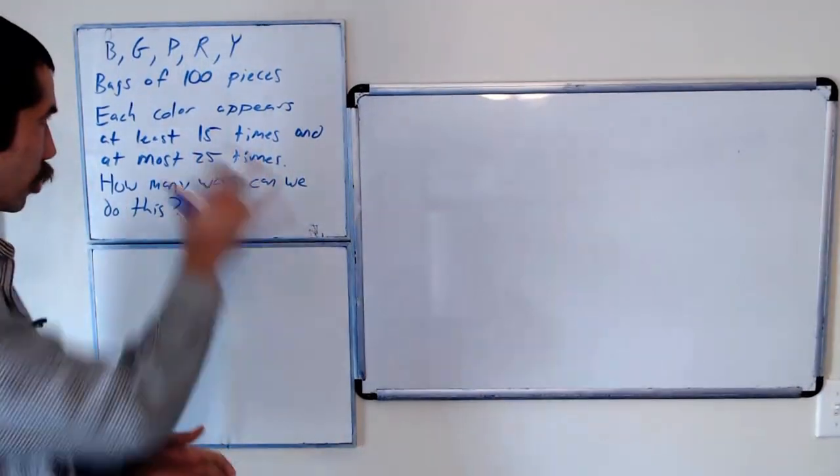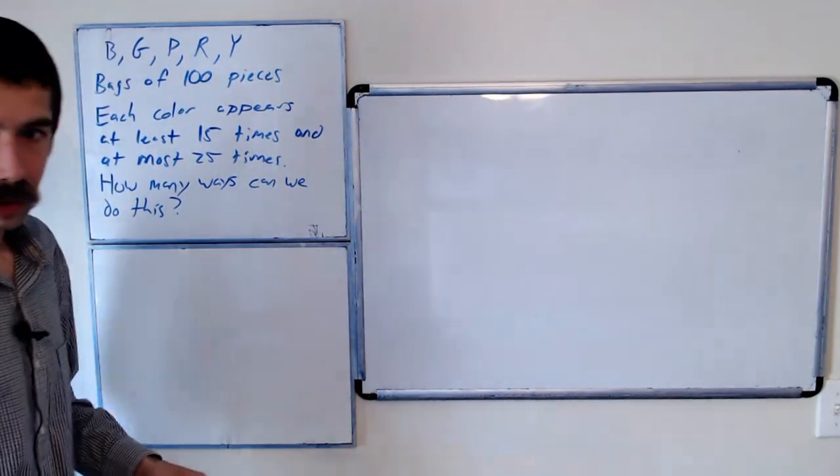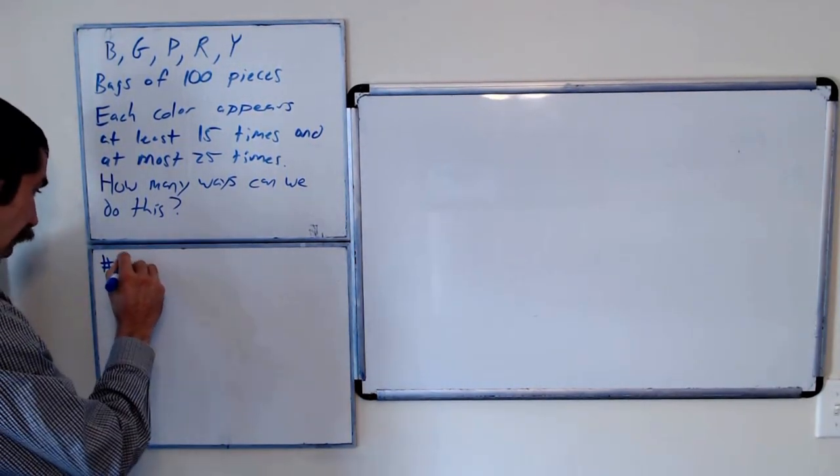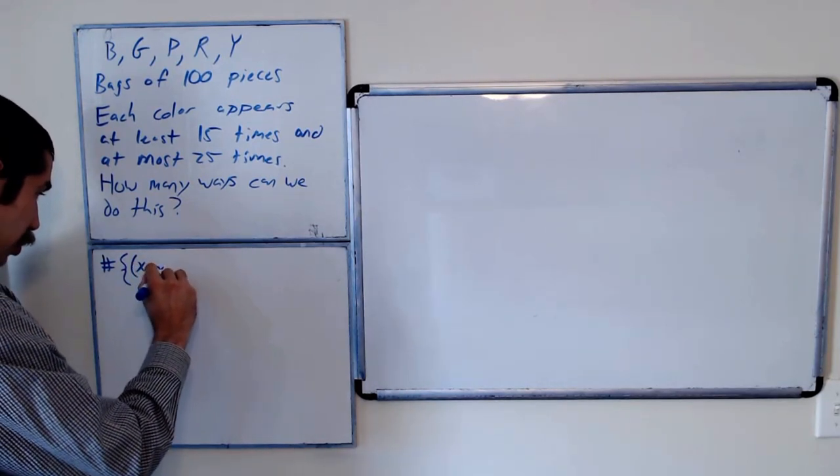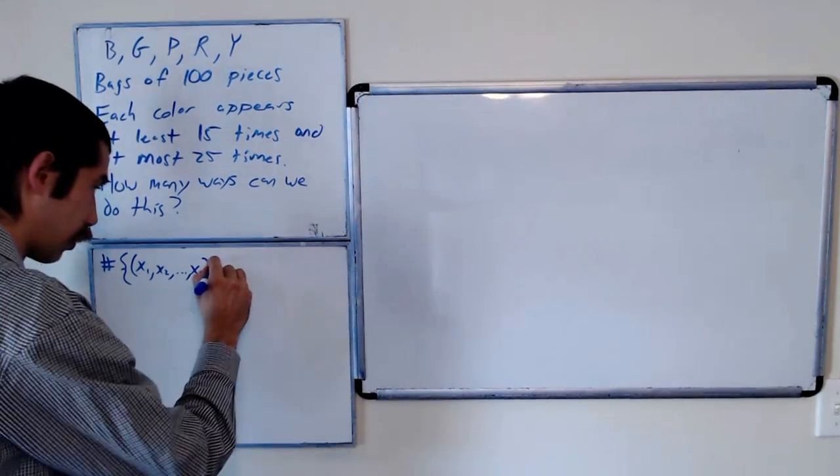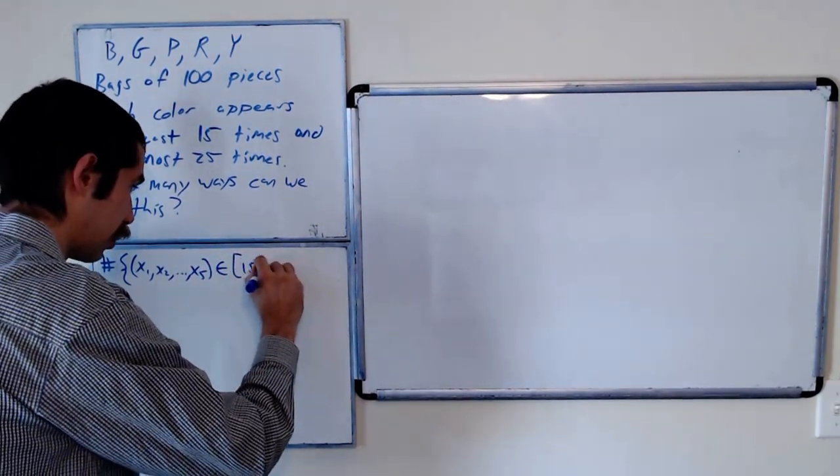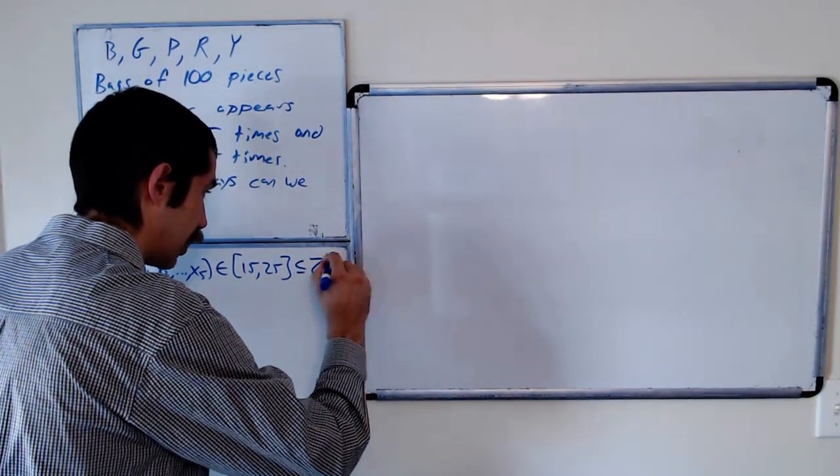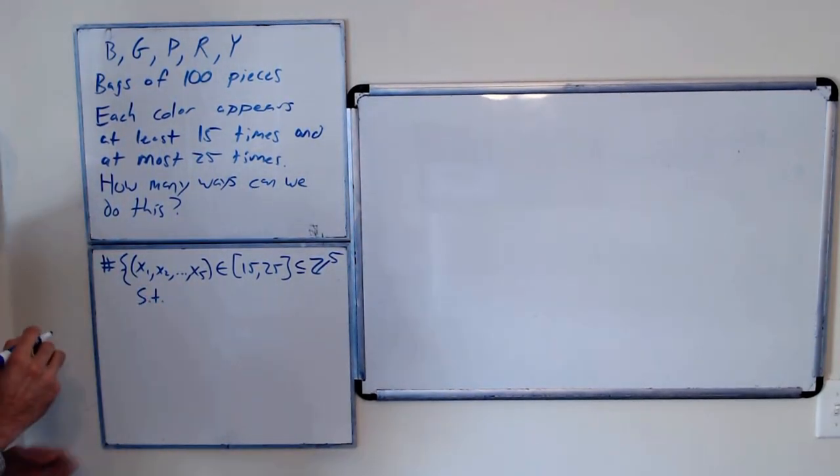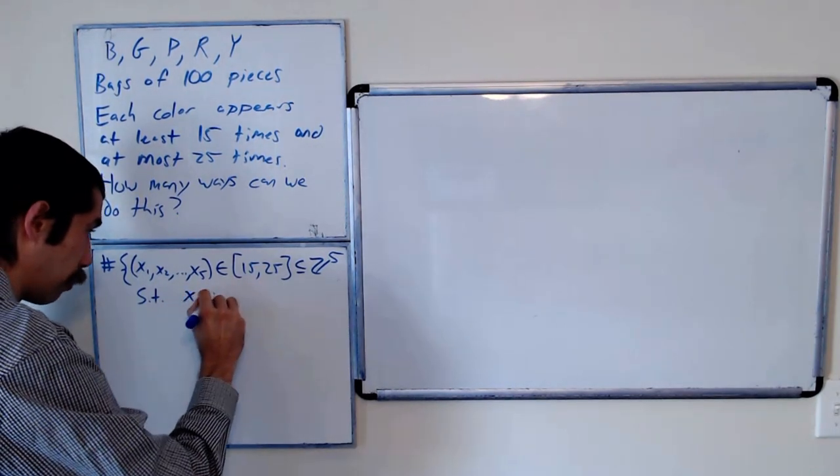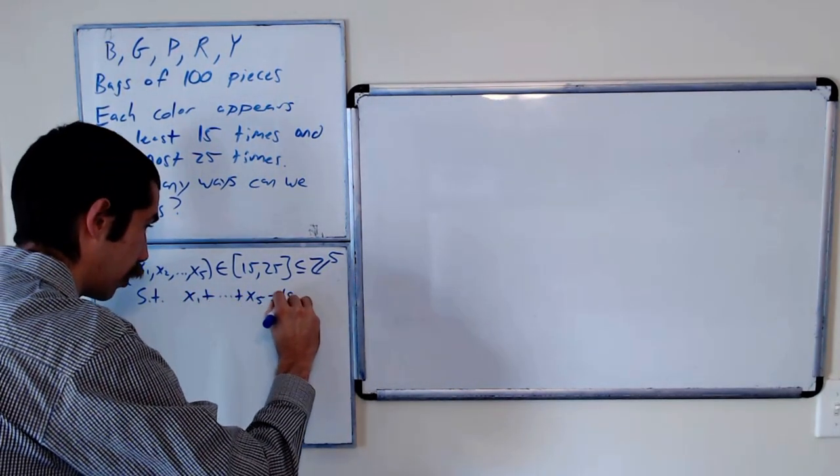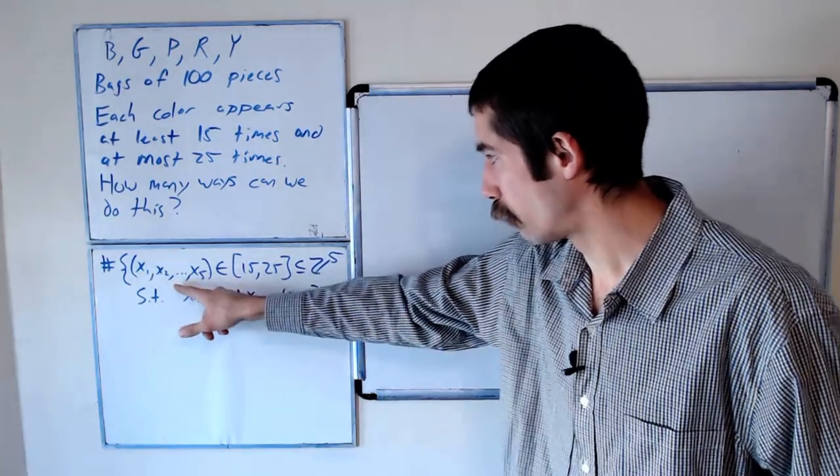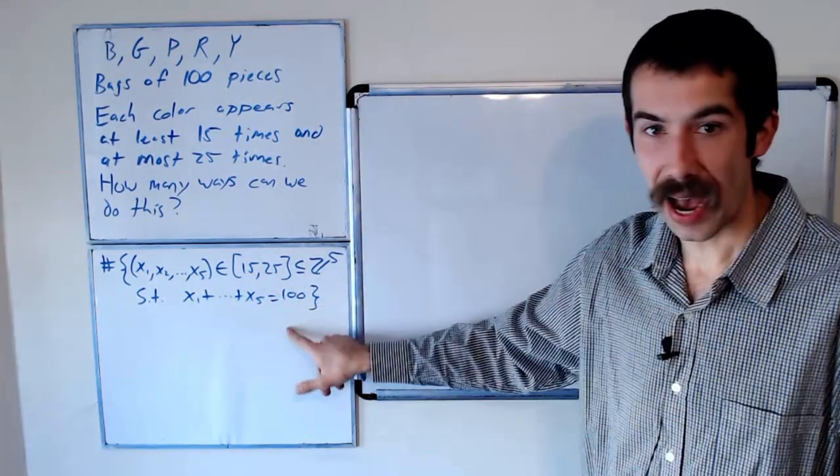So let's just get some notation down so we don't have to deal with colors. What we're trying to count is the number of groups of five. So let's call them x1, x2, up to x5 in the interval 15 to 25, which is a subset of z to the fifth, such that x1 plus x5 equals 100.